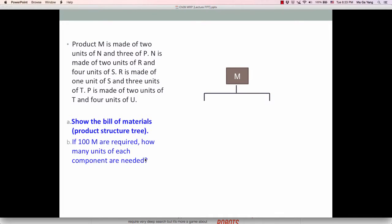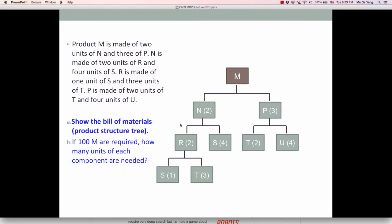Starting with end item M, it is made of 2 units of N and 3 units of P. So 2N and then 3P. And then N is made of 2 units of R and 4 units of S. Then we can skip R first. And then P is made of 2 units of T and 4 units of U. And then last one is R is made of 1 unit of S and 3 units of T. This is the BOM or product structure tree. It really describes how end item M looks like. This is level 0 all the way to level 3, highest level all the way to lowest level.